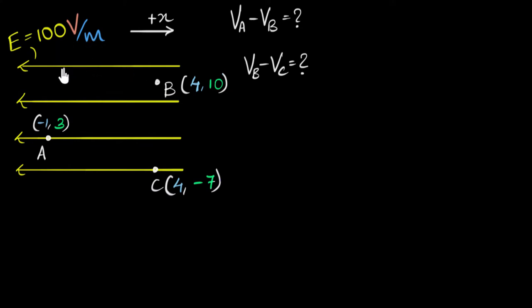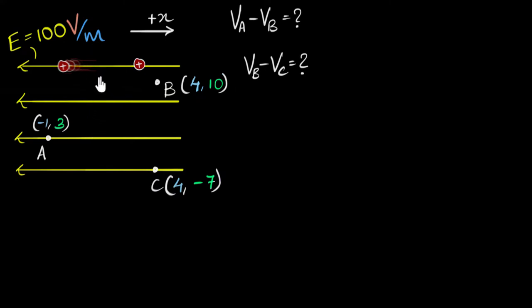If you're wondering why we lose potential as you go along the field: if you place a positive charge and let it go, it accelerates along the field, gaining kinetic energy, which means it loses potential energy — just like in gravity, things lose potential energy as they fall. So for every meter along the field you lose 100 volts, and every meter opposite to the field you gain 100 volts.